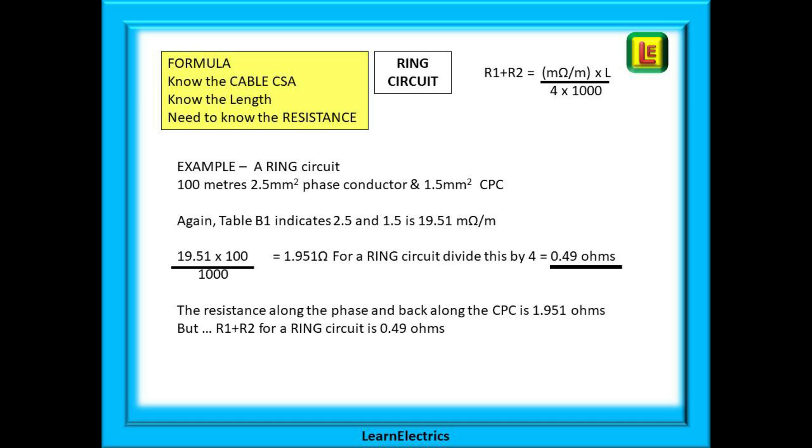Moving on to a ring circuit now, we will keep the same twin and earth cable, 2.5 phase with a 1.5 earth, and the same length of 100 meters. But because it is a ring circuit, we will have this thing called parallel paths, several pathways for the electrons to flow, and this will reduce the resistance by a factor of 4.